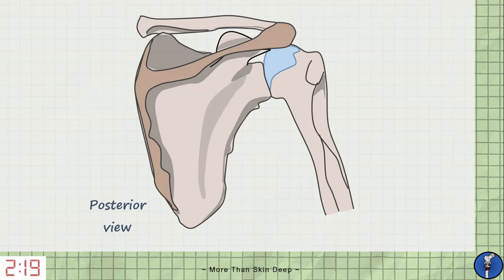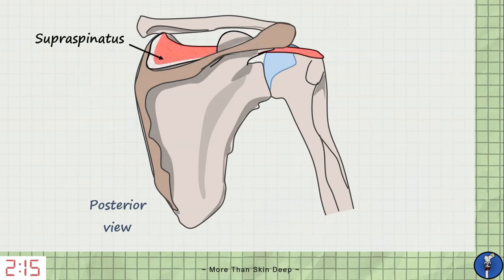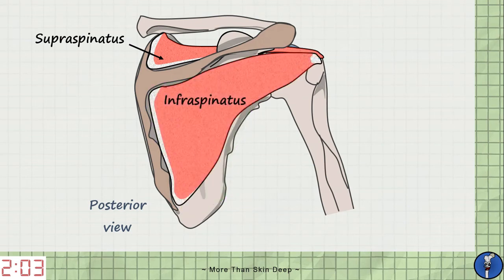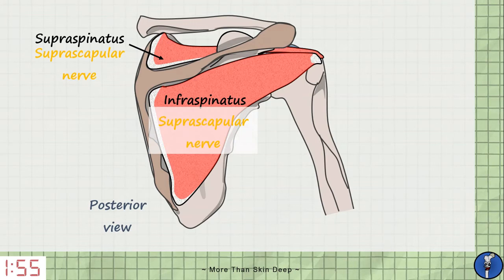Our first muscle comes from the supraspinous fossa and thus is simply named supraspinatus. It attaches to the greater tubercle of the humerus to abduct it the first 15 degrees. And again easily from the infraspinous fossa we have the infraspinatus. This also attaches to the greater tubercle and acts to rotate the arm externally. Both of these muscles are innervated by the suprascapular nerve.